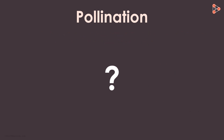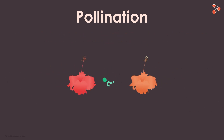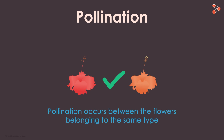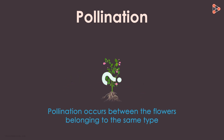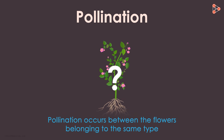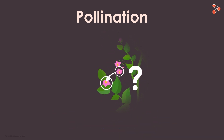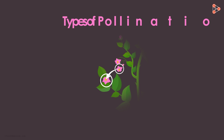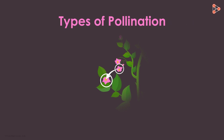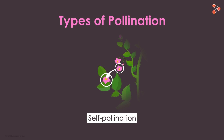Does this process occur only between two flowers of the same type? Yes, that is correct. Pollination occurs between the flowers belonging to the same type. And does that mean pollination occurs only between two flowers born on the same plant? The type in which pollination occurs between flowers born on the same plant is called self-pollination.